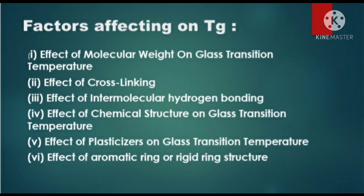Now we will discuss the factors that affect the Tg or glass transition temperature. These are: effect of molecular weight, effect of cross-linking, effect of intermolecular hydrogen bonding, effect of chemical structure, effect of plasticizer, and effect of aromatic ring or rigid ring structures.